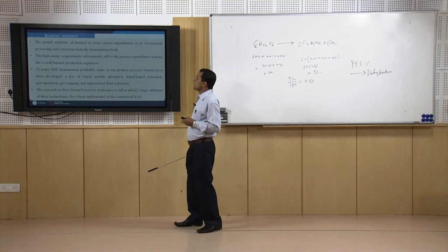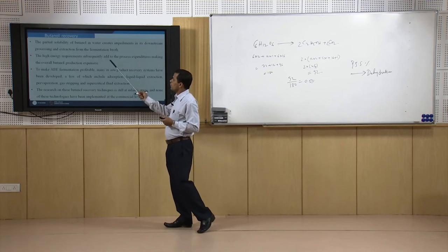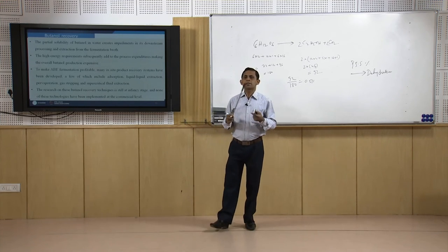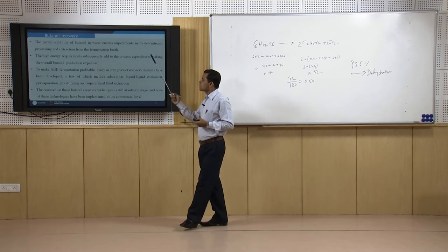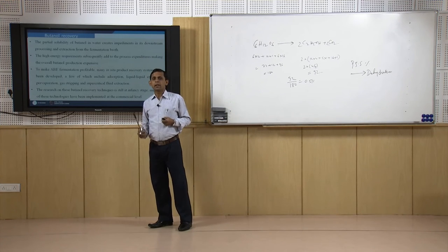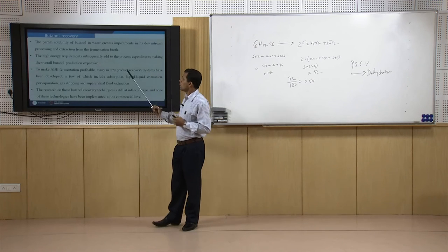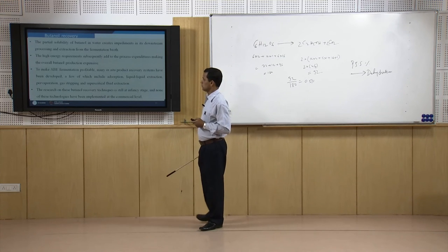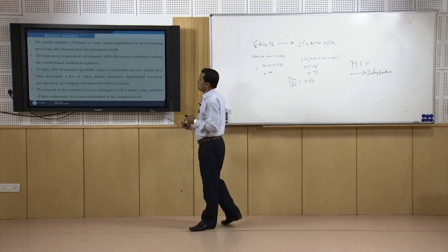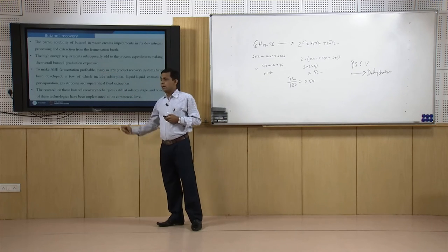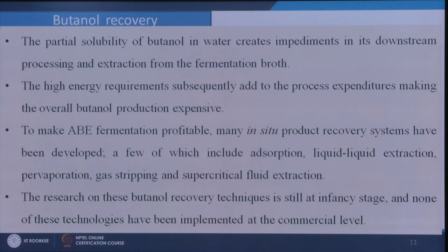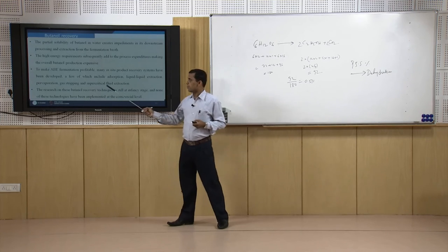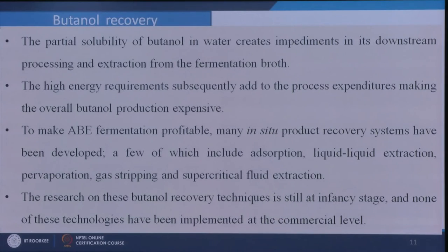The main challenges for butanol recovery from the media are its partial solubility with water and its high boiling point of around 117°C, which requires higher heat input for distillation compared to ethanol. Therefore, in-situ separation techniques for butanol in the ABE process are being developed. The important techniques include adsorption, liquid-liquid extraction, pervaporation, gas stripping, and supercritical fluid extraction.